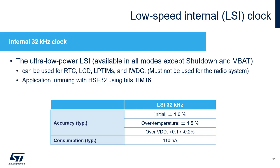STM32WL5 microcontrollers embed an ultra-low-power low-speed internal oscillator providing 32 kHz, named LSI. It is available in all modes except shutdown and VBAT. The LSI can be used to clock the RTC, low-power timers, and the independent watchdog. The accuracy of the LSI is ±1.6%, +1.5% over temperature, and +0.2% over voltage. The LSI consumption is typically 110 nanoamps. The LSI frequency can be trimmed versus HSE-32 by using the TIM-16 bits in capture mode.